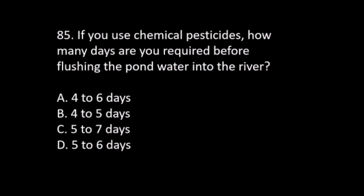Number 85. If you use chemical pesticides, how many days are you required to wait before flushing the pond water into the river? A. 4–6 days. B. 4–5 days. C. 5–7 days. D. 5–6 days. The answer is C. 5–7 days.